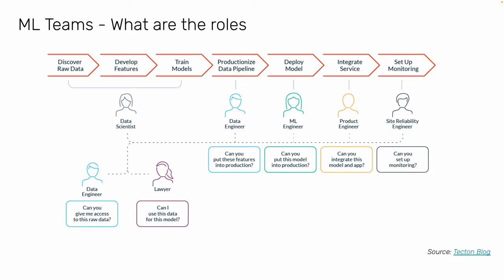In a typical ML team in a corporate setting, there are people responsible for different tasks. Data scientists discover raw data, develop features, and train models. Data engineers productionize the data pipeline — making data available at large scale. ML engineers deploy the model so it can be used by users. Then the service is integrated into a website or application, and then monitored. There's also a lawyer who can answer whether you can legally use certain data for your model.